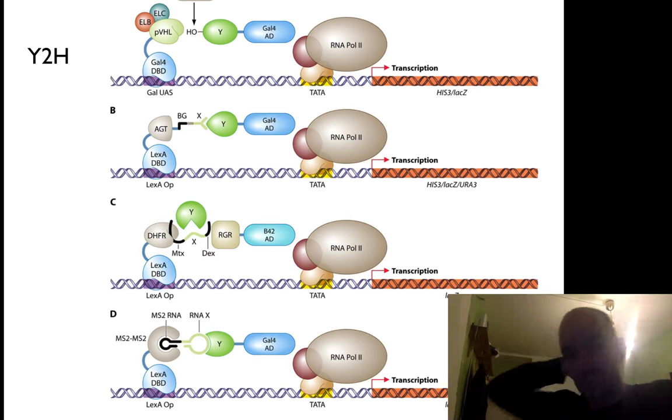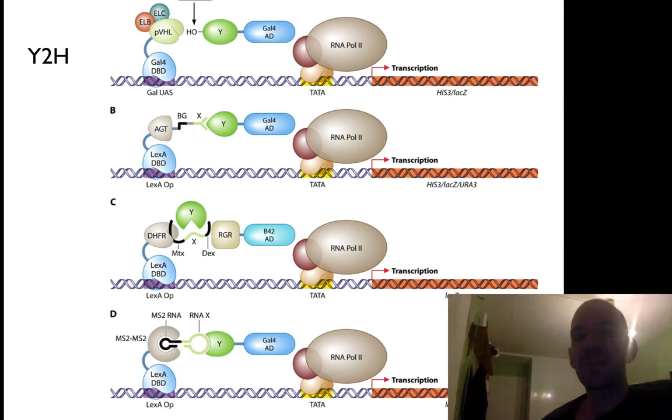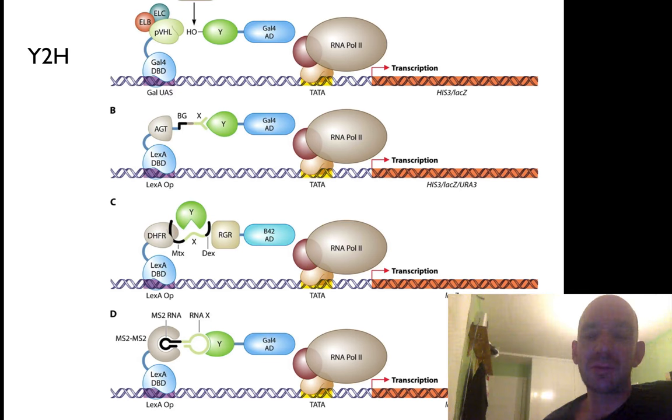With this system, you try all combinations of proteins, and you only get transcription if these two proteins are both expressed and interact. So you can basically try every pairwise interaction.